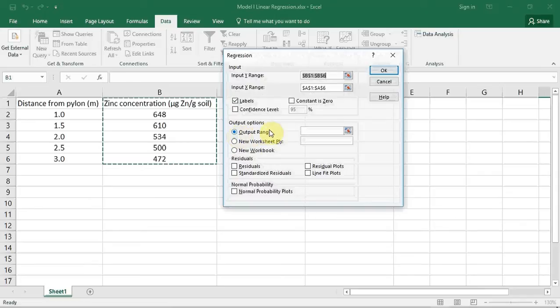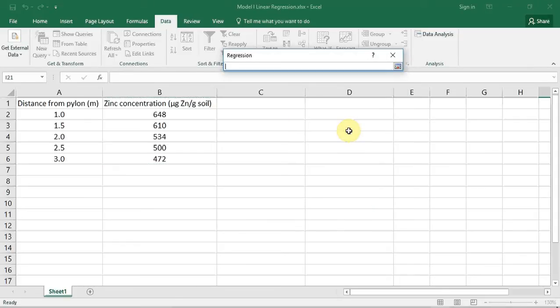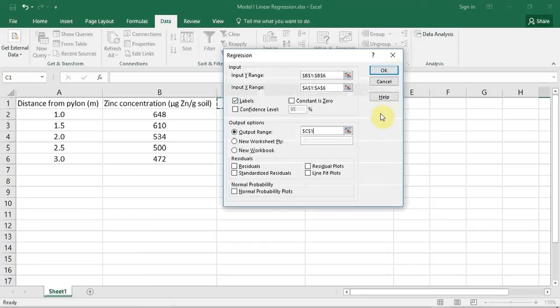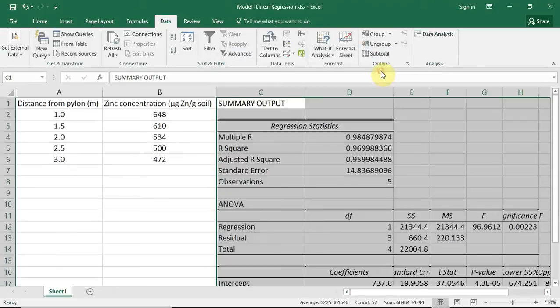I do that by pressing the button with the red arrow next to Output Range. I am going to select cell C1 and enter it into the program. I am now going to press OK to do the analysis.